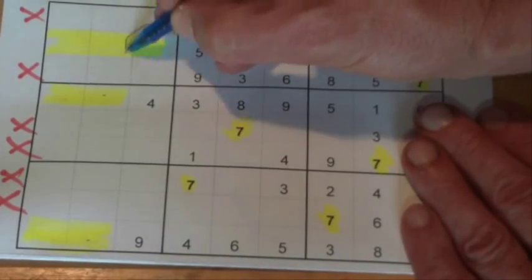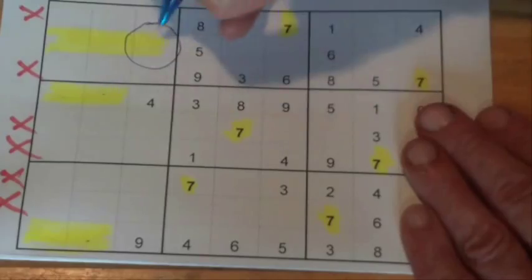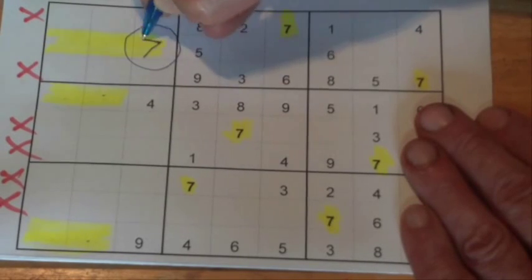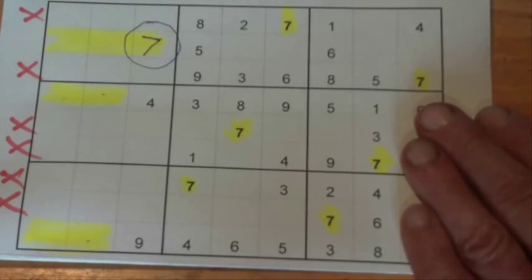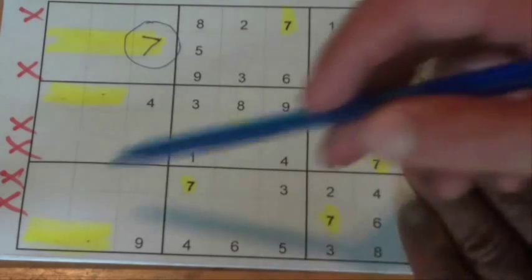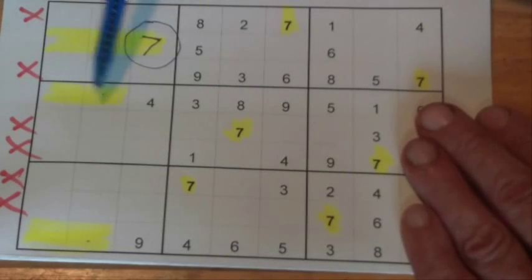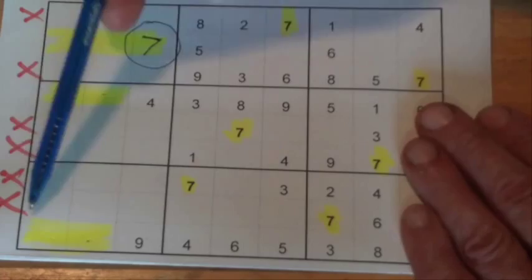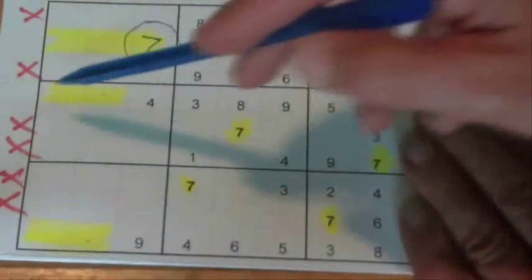And so that leaves you with this cell here on the right, as the only one left is going to be that cell there, which is your 7.